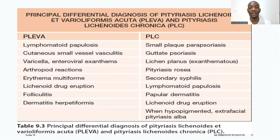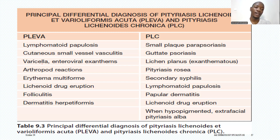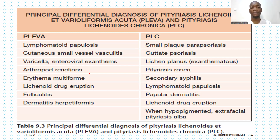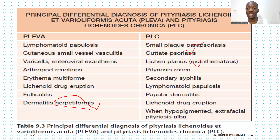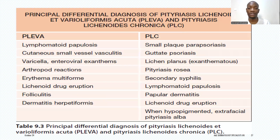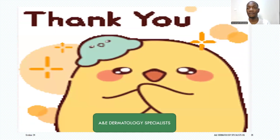Regarding differentials: for PLEVA, consider lymphomatoid papulosis, cutaneous small vessel vasculitis, varicella, other enteroviral exanthems, arthropod bite reactions, lymphoma, drug eruptions, folliculitis, and dermatitis herpetiformis — which gives deep-seated papules that are very pruritic, commonly located on the elbows, knees, back, and trunk. For PLC, consider small plaque parapsoriasis, guttate parapsoriasis, lichen planus — as it also gives interface dermatitis on histology — pityriasis rosea, secondary syphilis, papular dermatitis, and drug eruptions.